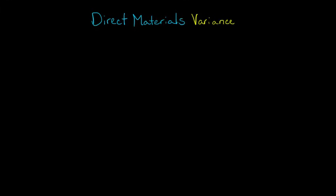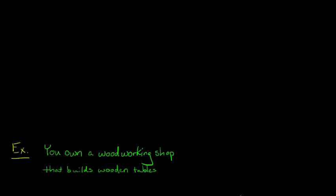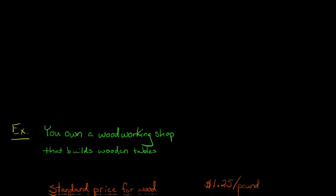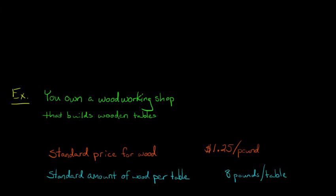In the last video, I gave some of the intuition behind the idea of standard costing. So in this video, we're going to jump right in and do a variance analysis for direct materials. Let's look at an example — it'll be a little bit easier to understand the concept. Let's say that you run a woodworking shop and you manufacture wooden tables, and you need to do some standard costing. First, you need to know what standard you're going to use as the benchmark for your production.